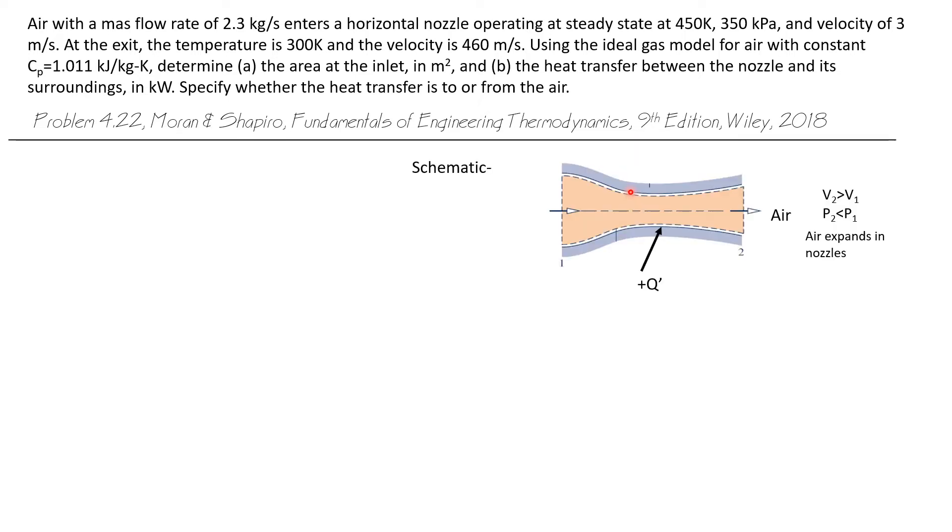Well, let's lay out our storyboard for this problem. We begin with a schematic. We have a converging diverging nozzle shown. Some nozzles only continue to get smaller as the air passes through them. But at any rate, a nozzle will always have a smaller discharge area than inlet area.